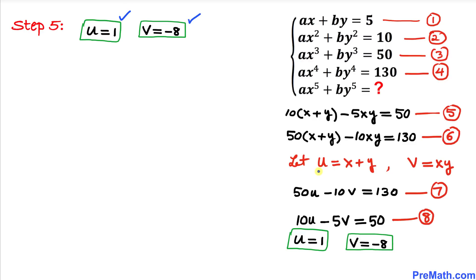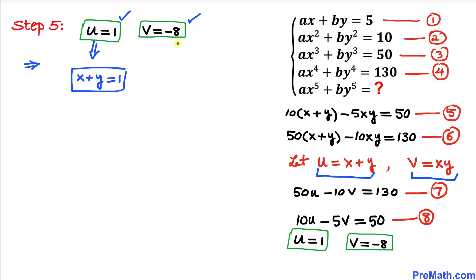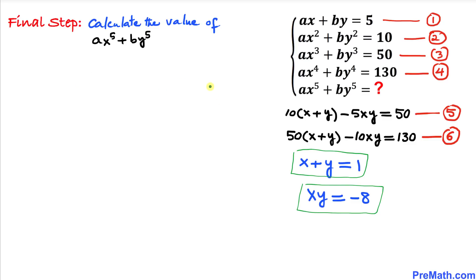We know that u = x + y and v = x·y. So x + y = 1 and x·y = −8. Here's our final step — let's calculate the value of ax⁵ + by⁵.